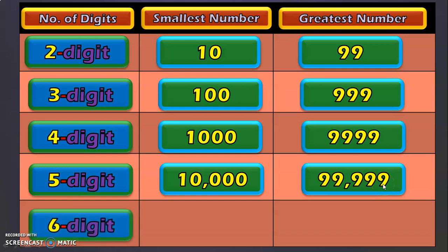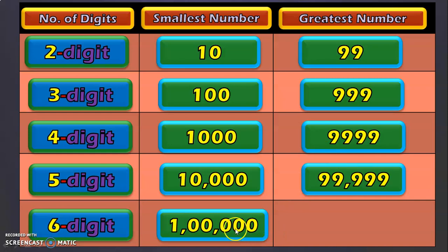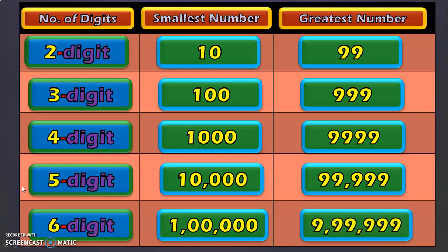We will also be dealing with 6 digit numbers in class 4. The smallest 6 digit number is 1,00,000, which is called 1 lakh. I have dealt very clearly about place values in my place value videos for 5 and 6 digit numbers — links will be given below in the description box and in the iCard section. The greatest 6 digit number is 9,99,999. It is very important to know the smallest and greatest numbers because it helps in comparison of numbers and also increases the number sense for children.